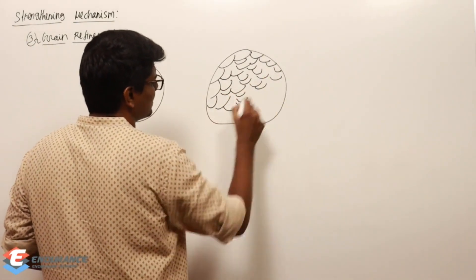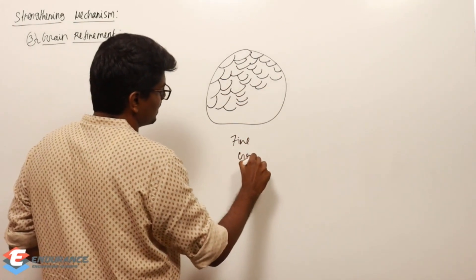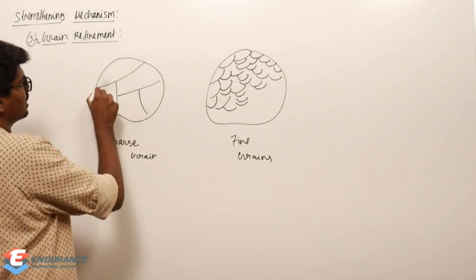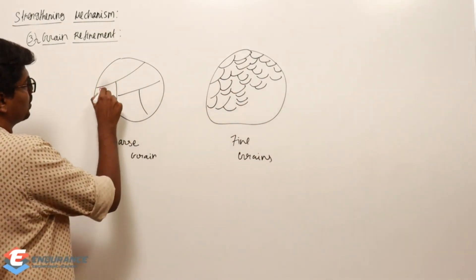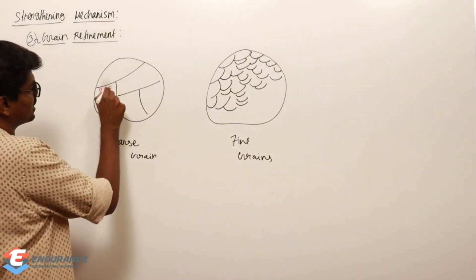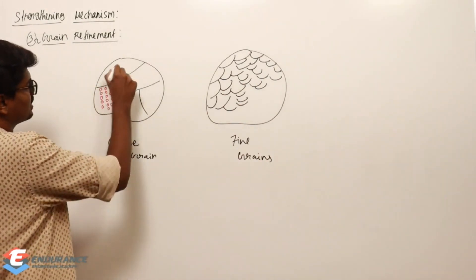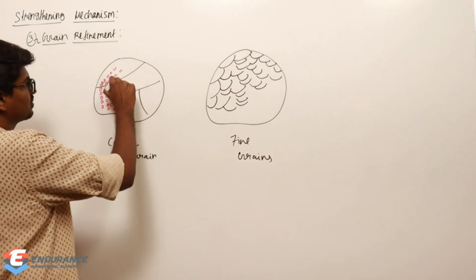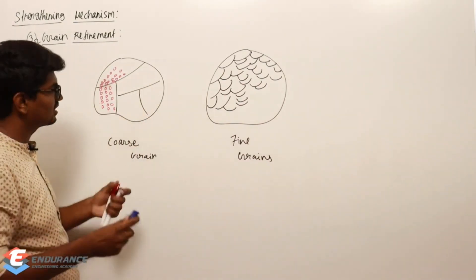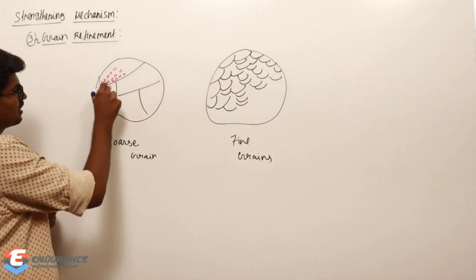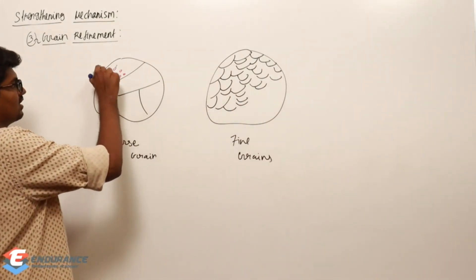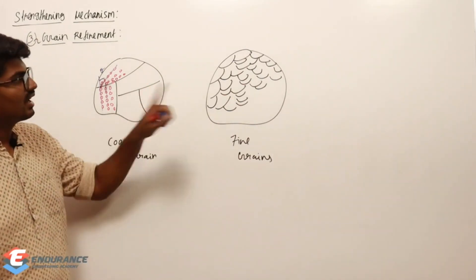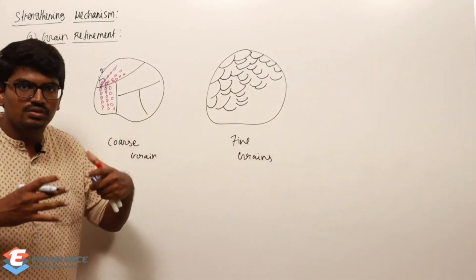In a grain boundary, the atomic orientation changes between adjacent grains. One grain has atoms oriented in one direction, and the next grain has a different orientation, with an angle theta between them. If there are more grain boundaries, there are more orientation changes.